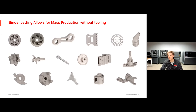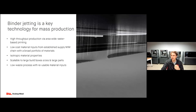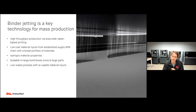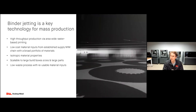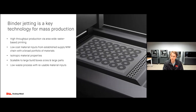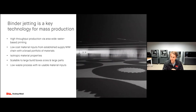Binder jetting really allows for mass production without tooling. What makes binder jetting so great for mass production? It has very high throughput because it uses area-wide raster-based 3D printing rather than vector-based single-point processes. We can print entire layers of a large volume in just a few seconds. We use very low-cost materials from an established metal injection molding supply chain, which gives a very broad range of materials and expected material properties. You get isotropic material properties thanks to the sintering process, and it's very scalable. There's also very low waste — any material that's not printed can be reused.